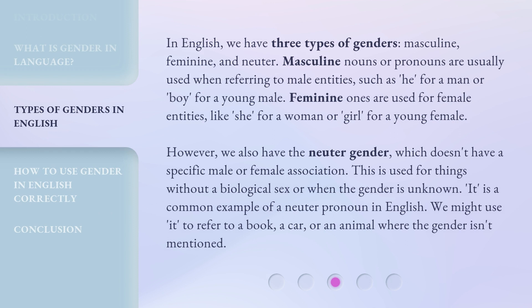In English, we have three types of genders: masculine, feminine, and neuter. Masculine nouns or pronouns are usually used when referring to male entities, such as 'he' for a man, or 'boy' for a young male. We also have the neuter gender, which doesn't have a specific male or female association. This is used for things without a biological sex or when the gender is unknown — 'it' is a common example of a neuter pronoun. We might use it to refer to a book, a car, or an animal where the gender isn't mentioned.